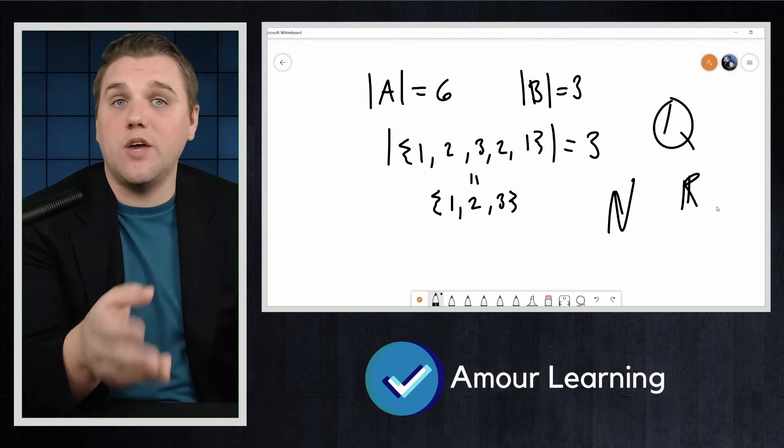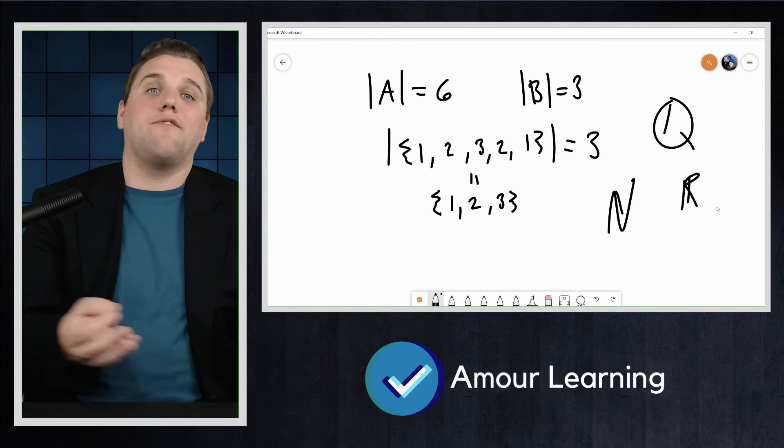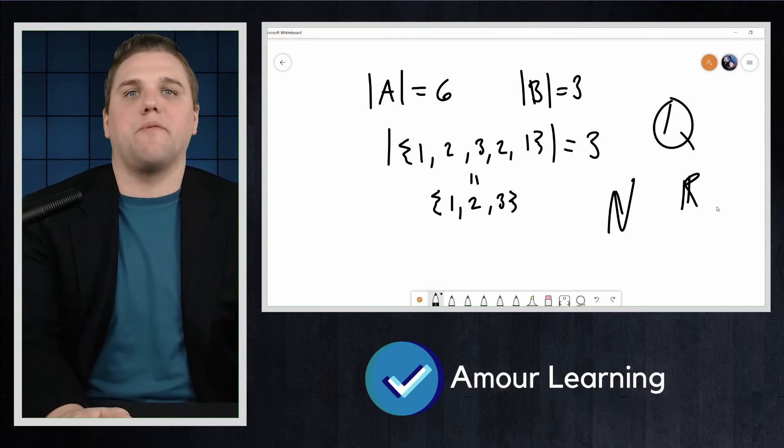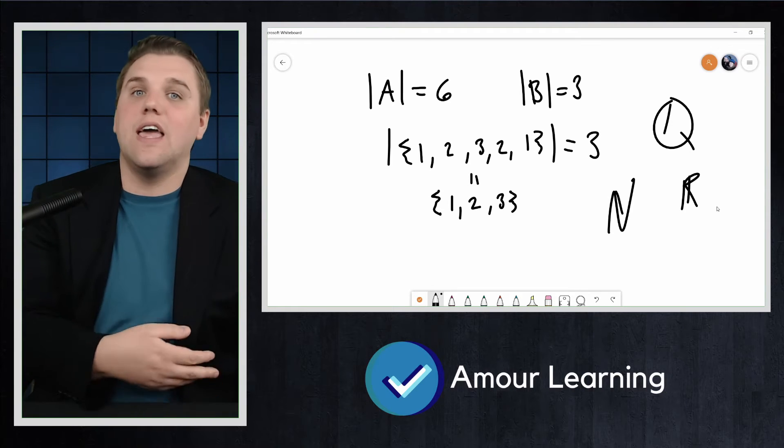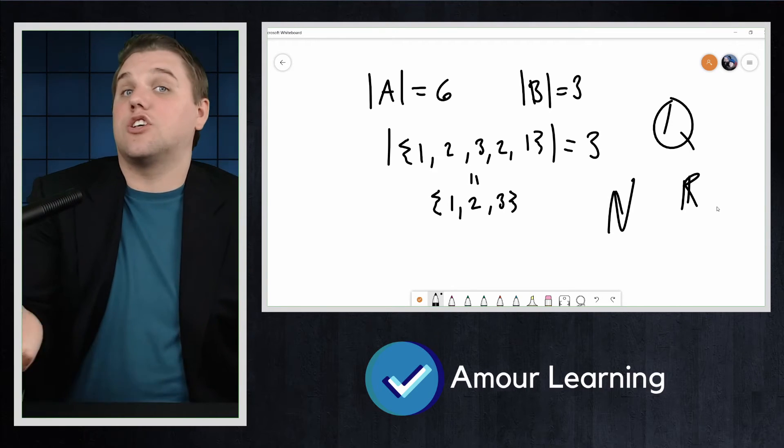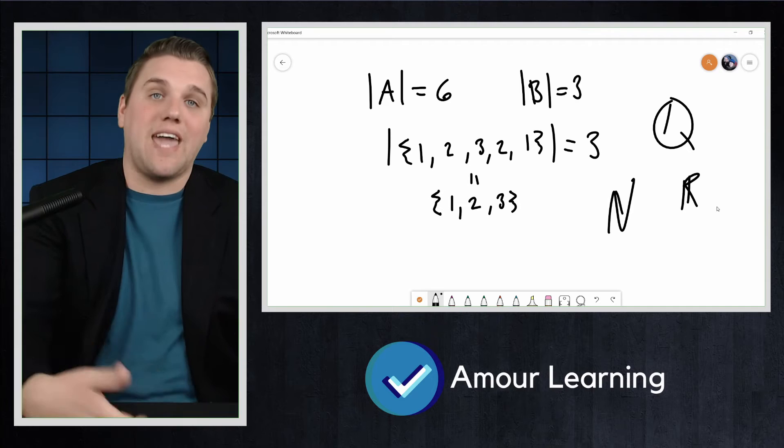It is possible to distinguish between different infinite cardinalities, but that is well beyond the scope of this course. For us, a set will either be infinite or finite. If it is finite, the way we can determine its cardinality is by counting elements.